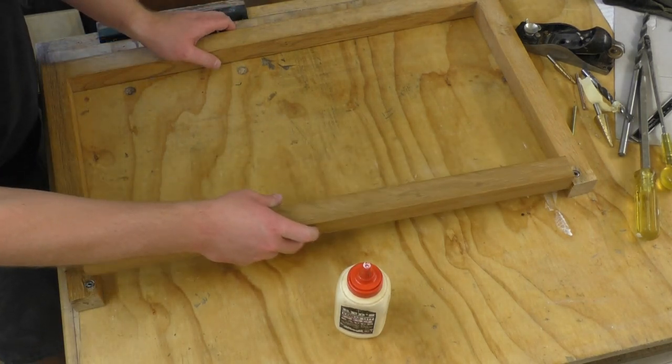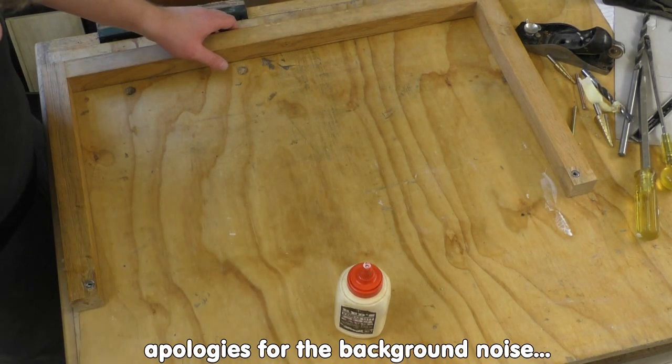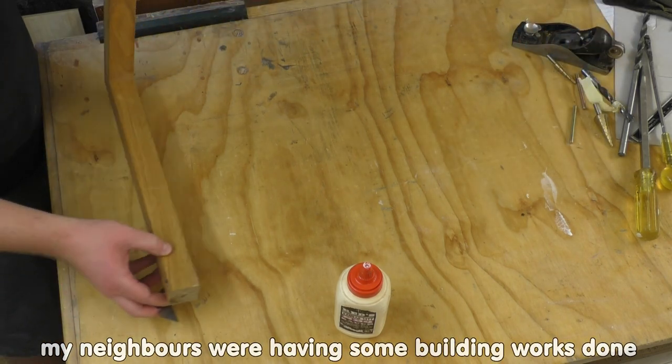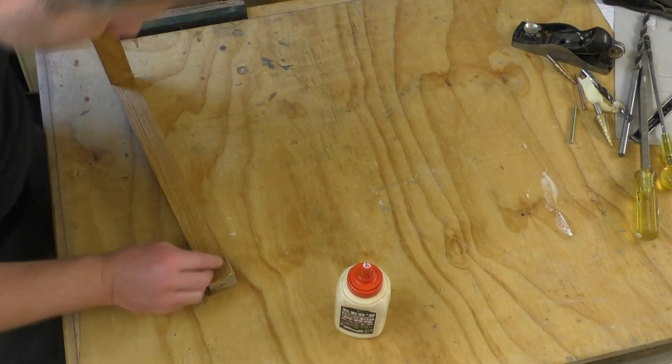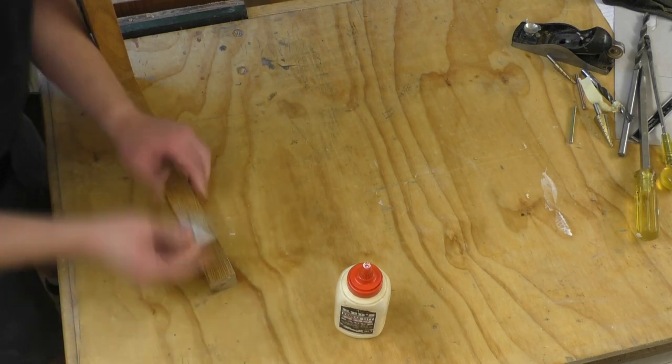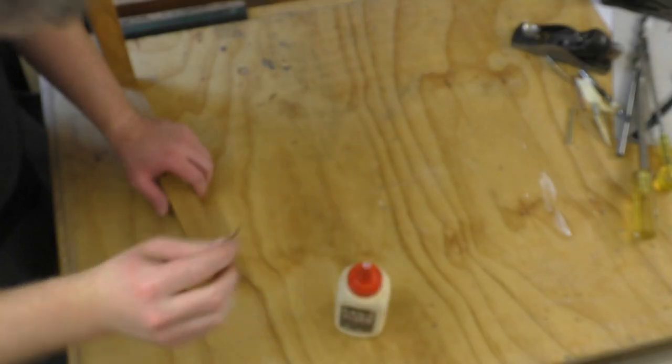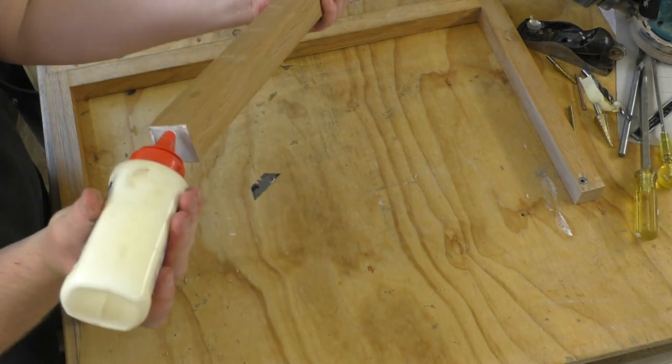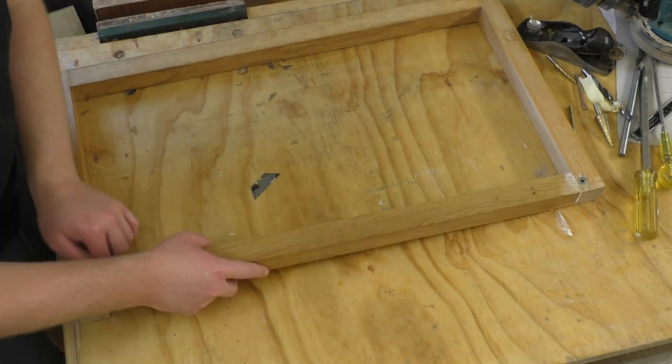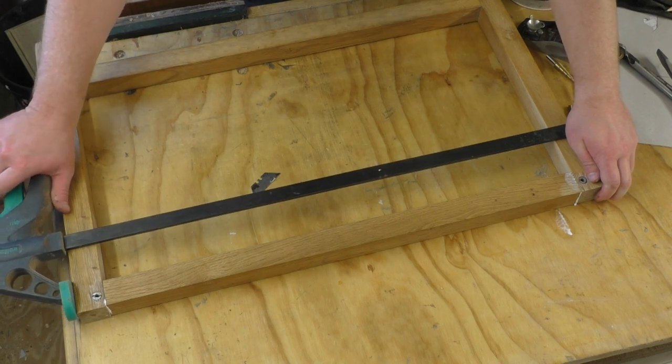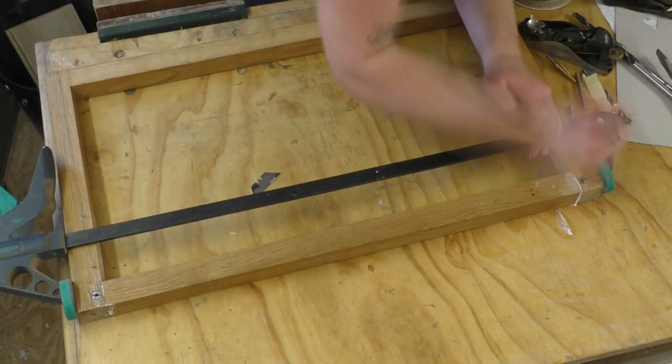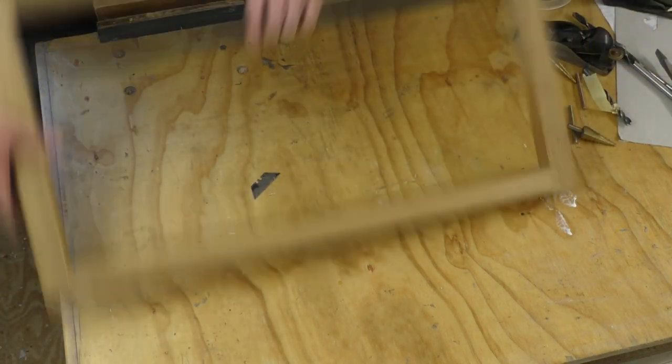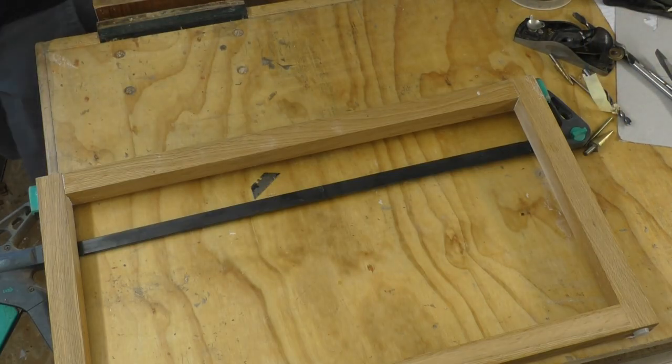Now I can add the top part of the frame, but before I do that I'm just going to scrape away any old finish from the legs so that the glue adheres properly. I'm just using a knife blade for this. Now I'm just adding glue. I'm going to use a clamp to hold this in place. And now I can leave that to dry.